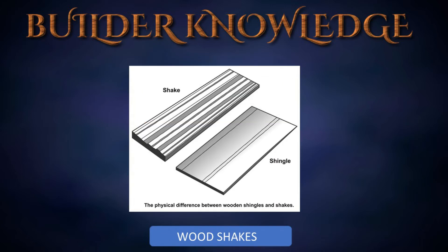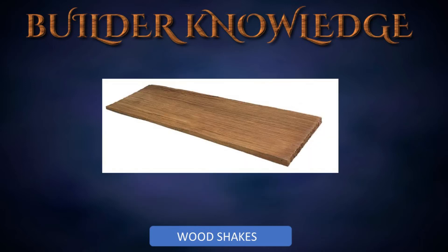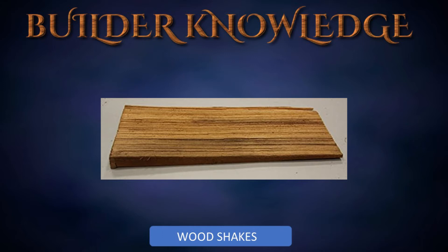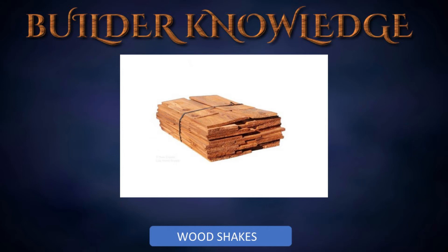Next let's talk about wood shakes. Wood shakes are similar to shingles but are typically split rather than sawed from cedar logs, producing a rougher and more rustic appearance. Shakes come in different types: taper split (cut in a taper), straight split (no taper), and hand-split and resawed shakes (split and then resawed at a taper). Shakes are available in random widths starting from four inches and in standard lengths of 18, 24, and 32 inches, usually packed in bundles of 20 square feet with five bundles to the square.